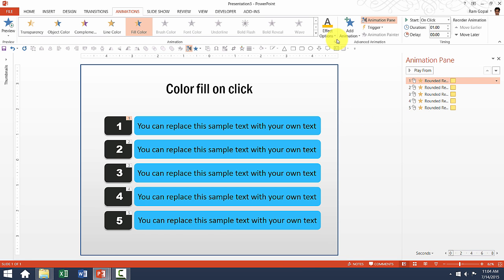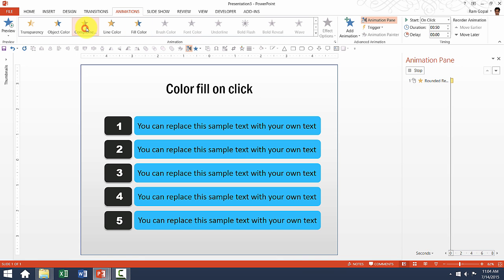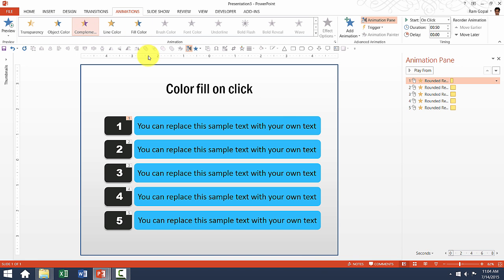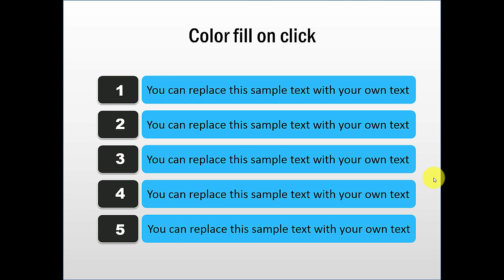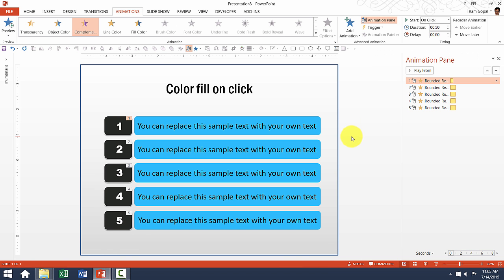You can also change the effect options of any animation. The second thing is, instead of the existing animation, you can apply a different animation entirely. For example, instead of the fill color option, let's say I want the complementary color option. The color complementary to blue seems to be purple. So in slideshow mode, when I click, the color changes automatically to the complementary color — that is the new animation applied.